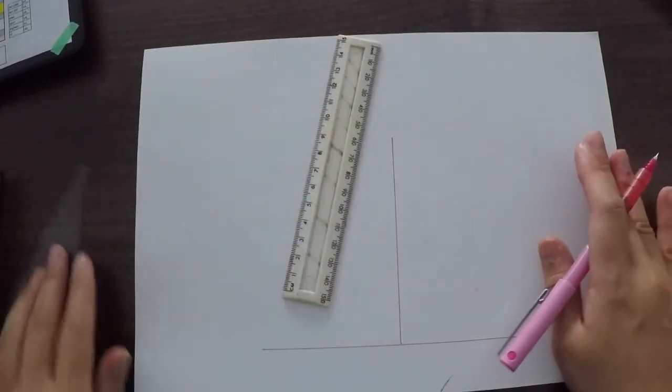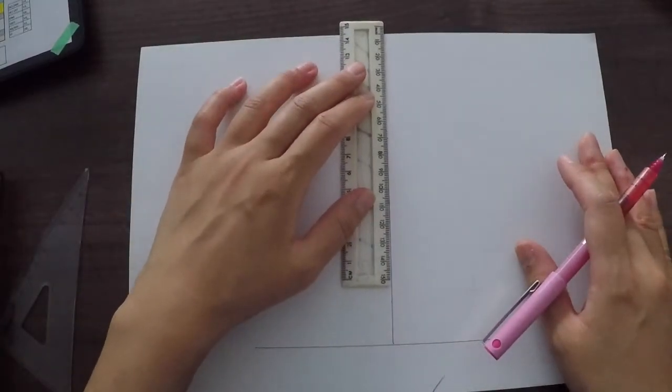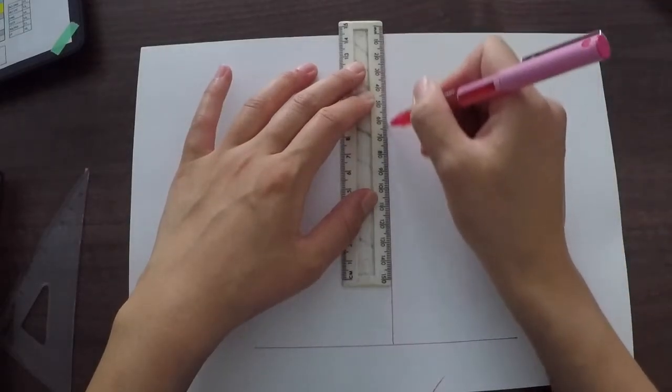But obviously when I turn it this way it is going to be vertical. Then I'm going to grab my ruler and I'm just going to extend that line right to the end like so.